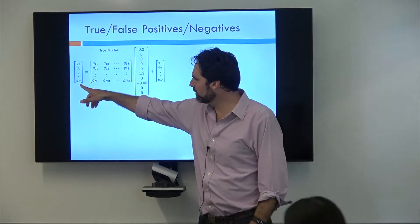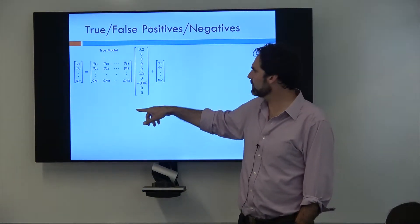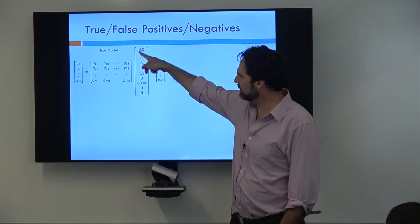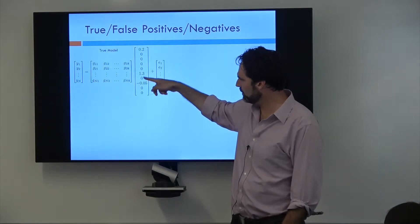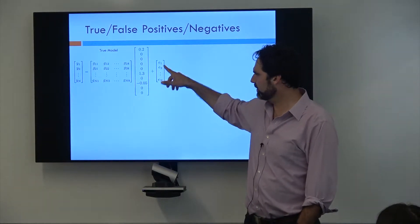We have our phenotypes of N individuals. We have a genotype matrix. This is our effect sizes. So this is the effect of SNP1, effect of SNP2, so on and so forth. And these are the true effects. And then we have some environmental component.